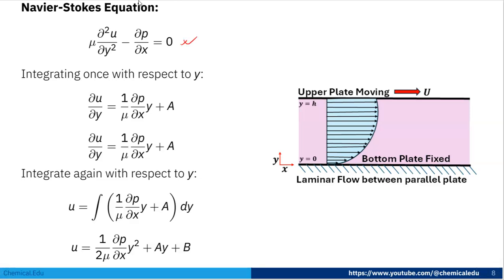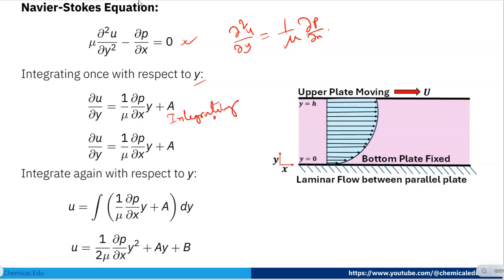From the Navier-Stokes equation we obtained: ∂²u/∂y² = (1/μ)·∂p/∂x. Integrating once with respect to y gives: ∂u/∂y = (1/μ)·(∂p/∂x)·y + A, where A is an integration constant. Integrating again gives: u = (1/2μ)·(∂p/∂x)·y² + A·y + B, where A and B are constants to be found from boundary conditions.